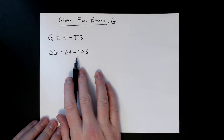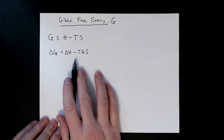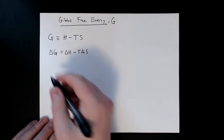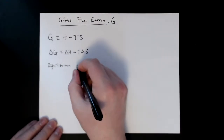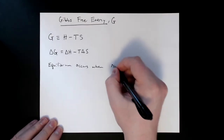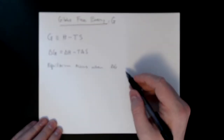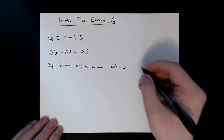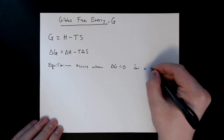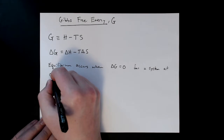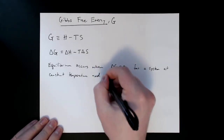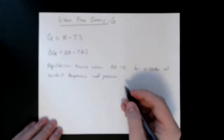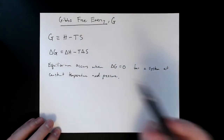This might be the definition of Gibbs free energy you've seen before. The reason we define it this way is because equilibrium — which is what we strive to look at — occurs when the change in Gibbs free energy, ΔG, equals zero. This is for a system at constant temperature and pressure.